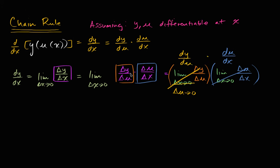So just like that, if we assume y and u are differentiable at x — or you could say that y is a function of u, which is a function of x — we've shown in fairly simple algebra, and using some assumptions about differentiability and continuity, that it is indeed the case that the derivative of y with respect to x is equal to the derivative of y with respect to u times the derivative of u with respect to x. Hopefully you find that convincing.